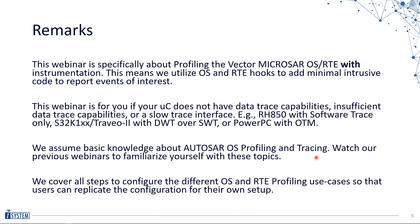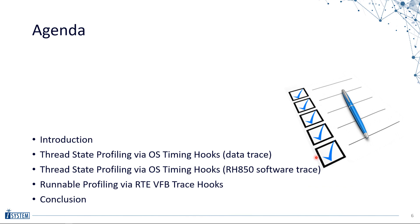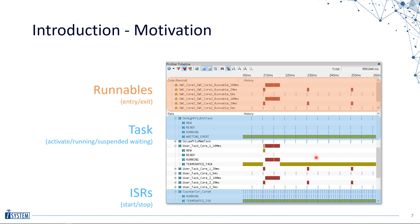The idea is to walk through the steps in a lot of detail, not to explain in detail what the data can be used for — we assume you know why you want to record this data. We started with a little introduction, then we will look at thread state profiling via timing hooks with data trace, then via RG50 software trace, and then at runnable profiling via the RTE Virtual Function Bus trace hooks.